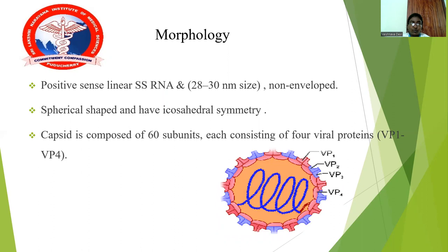The morphology of the poliovirus: the poliovirus is a positive-sense linear single-stranded RNA. It is 28 to 30 nanometers in size. It is a non-enveloped, spherical virus with icosahedral symmetry. Its capsid is composed of 60 subunits, each consisting of four viral proteins: viral protein 1, 2, 3, and 4.